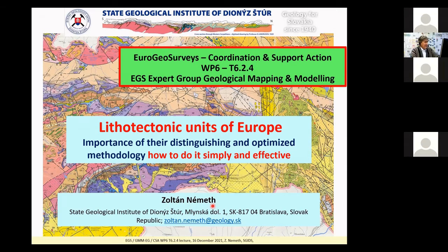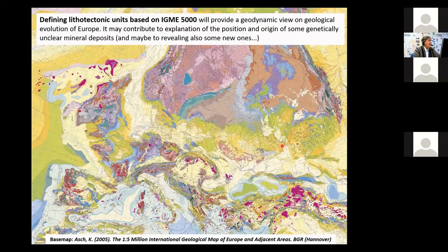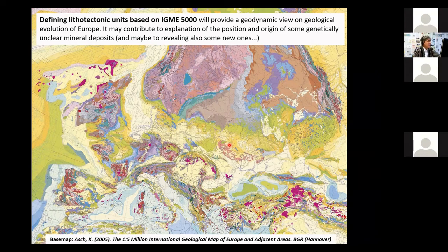My name is Zoltan Nemedes; I was introduced already, and I work at the State Geological Institute from Slovakia. This map by Christine Ash will be used for our lithotectonic research. We will try to add layers showing individual products of orogenic cycles, because all our work will be based on orogenic cycles and even more detailed orogenic phases. This is important for activities concerning raw materials exploration and environmental geology.